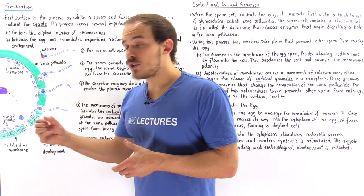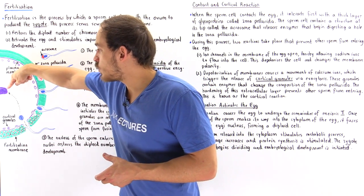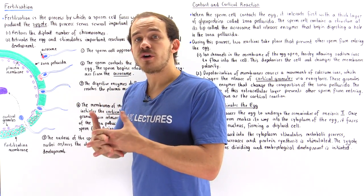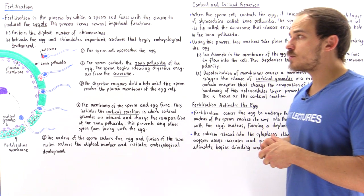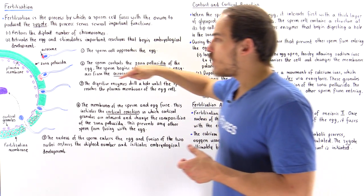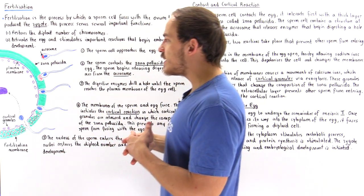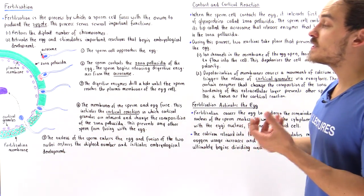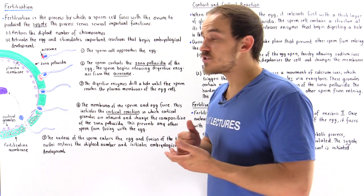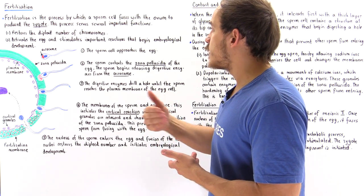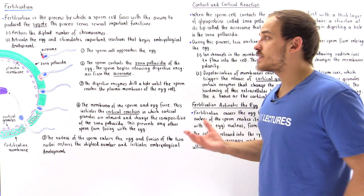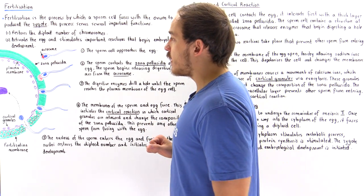We have the fusion of these two nuclei and restore the diploid number of chromosomes — combining 23 chromosomes from the male parent and 23 from the female parent to produce 46 chromosomes, the diploid number in the human organism. Once fusion of the two nuclei takes place, different metabolic processes such as protein synthesis are initiated, eventually leading to embryological development, which will be discussed in the next several lectures.